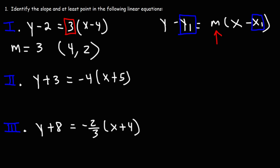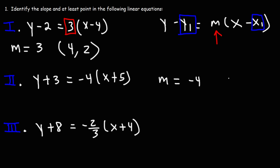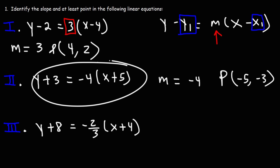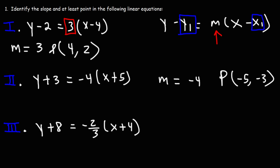So now we have the slope and the point given the linear equation in point-slope form. Now let's move on to number 2. We can easily see what the slope is — it's the number right there, so that is negative 4. And now we need at least one point. For x1, we see a 5 in its position, but we need to change it and make it negative 5. And for y1, we see a positive 3, so we change it and make it negative 3.